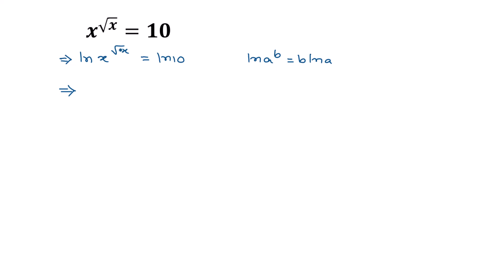We can write b times ln of a, that means square root of x times ln of x, is equal to ln of 10 on the right side.